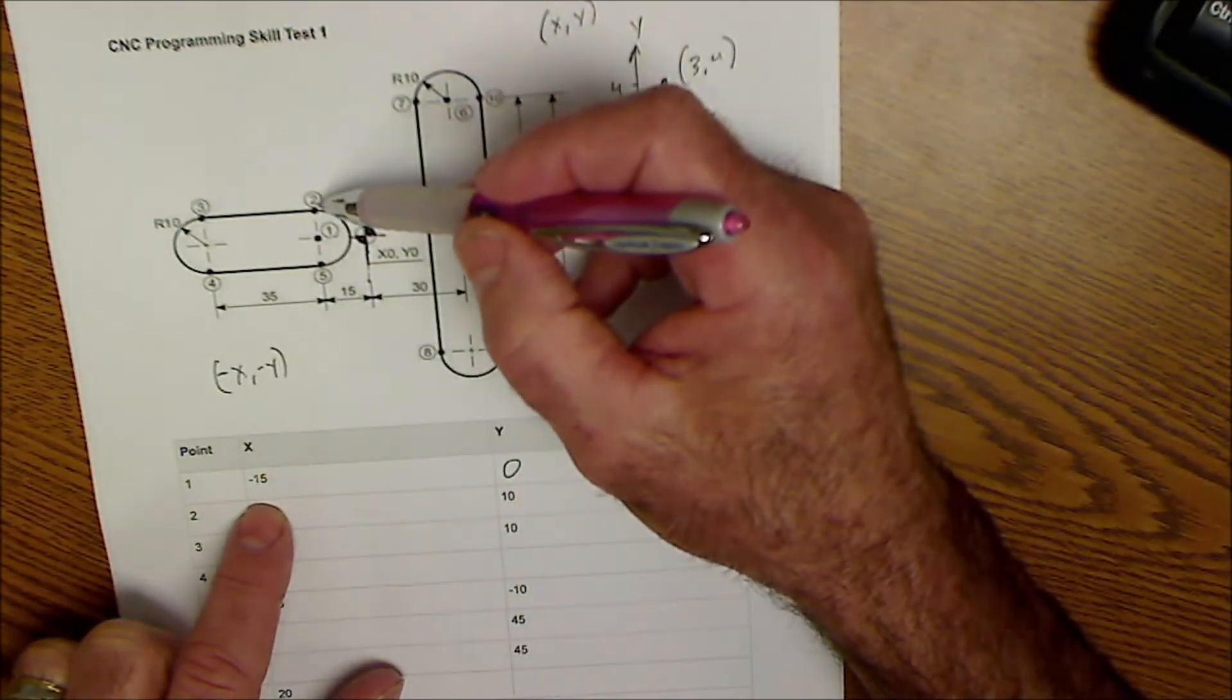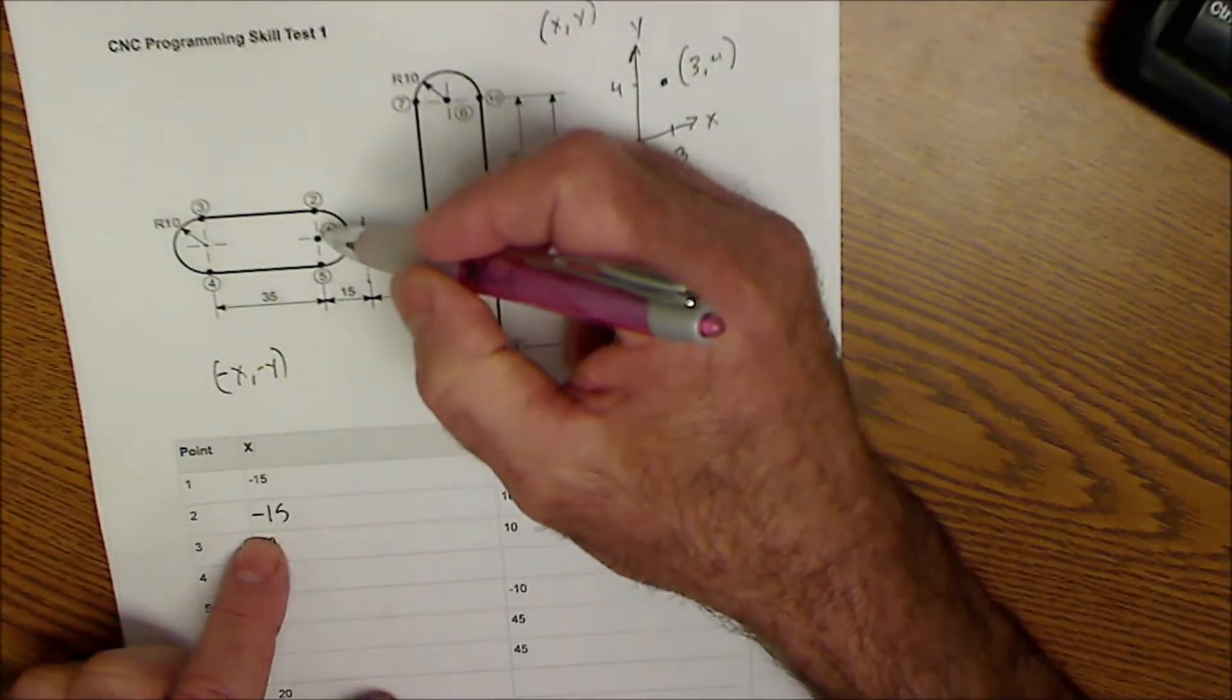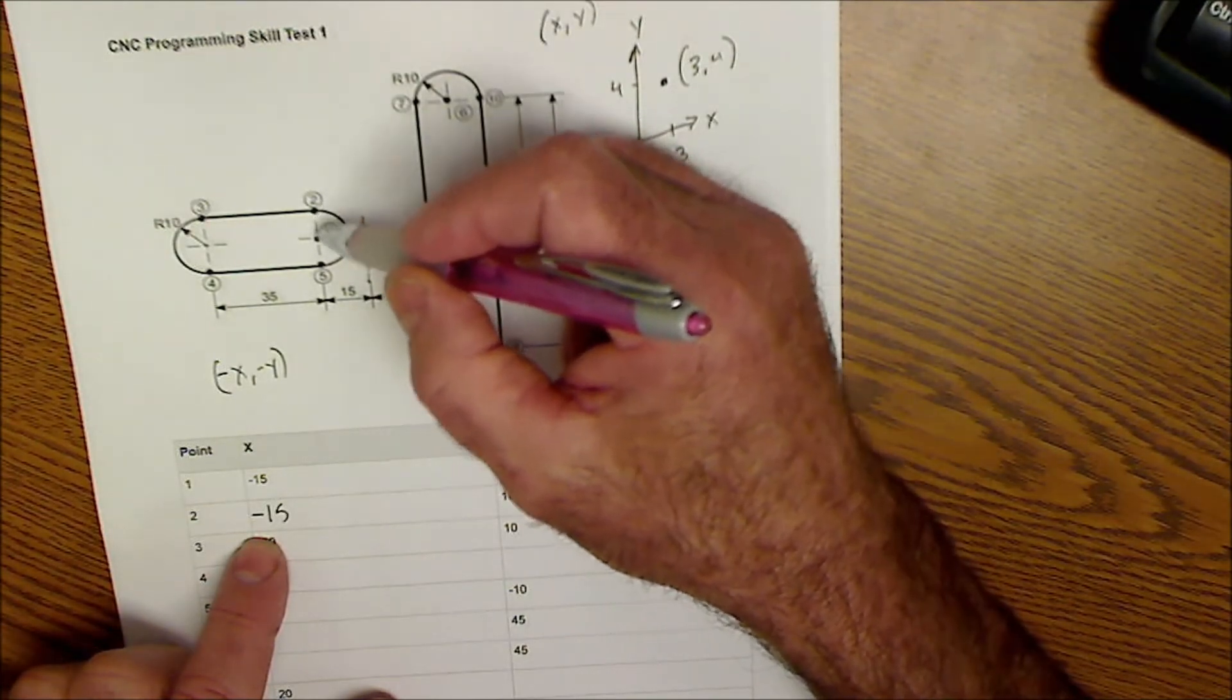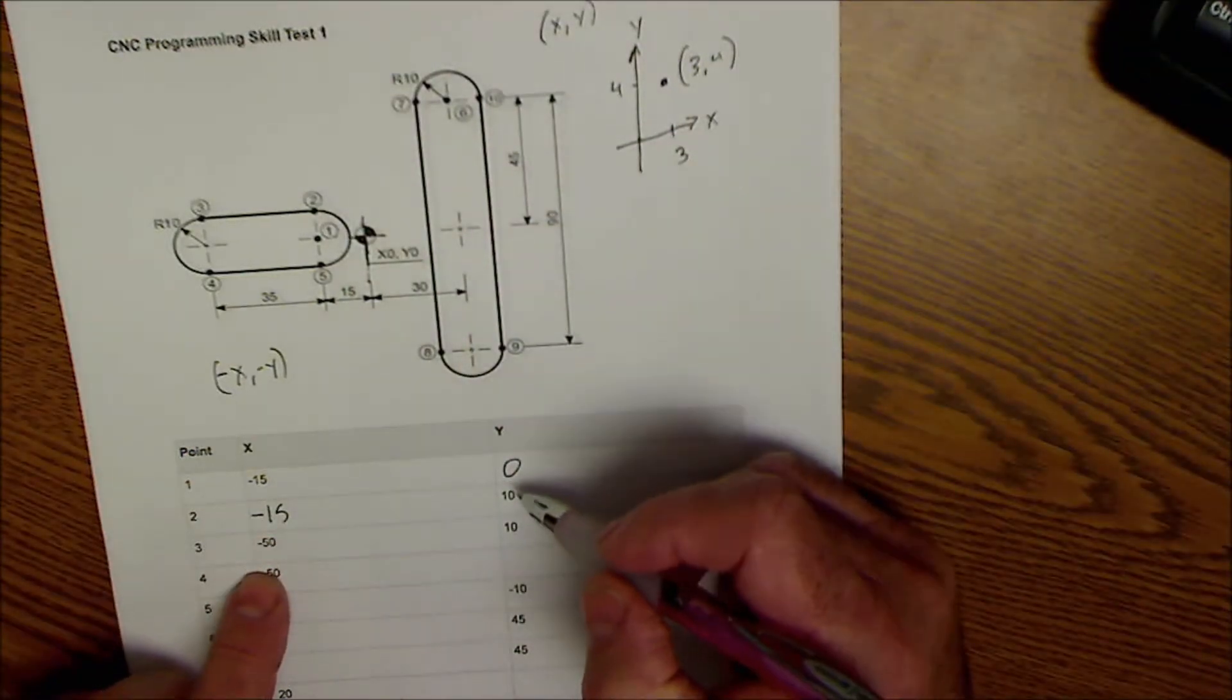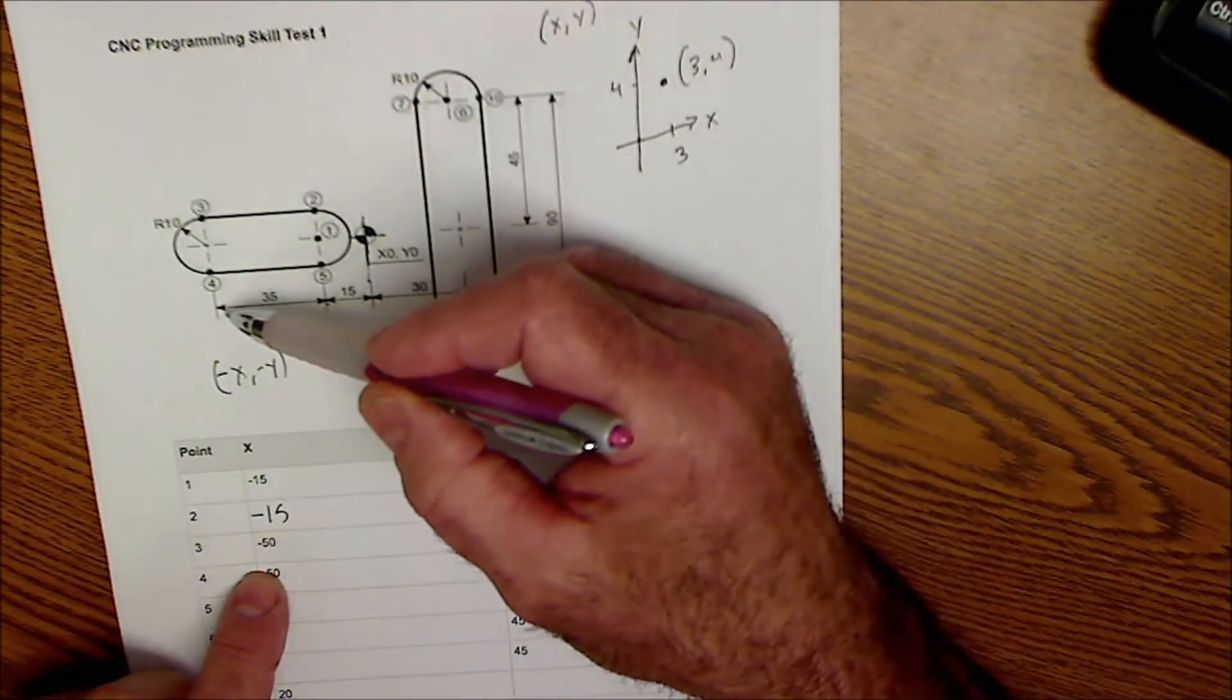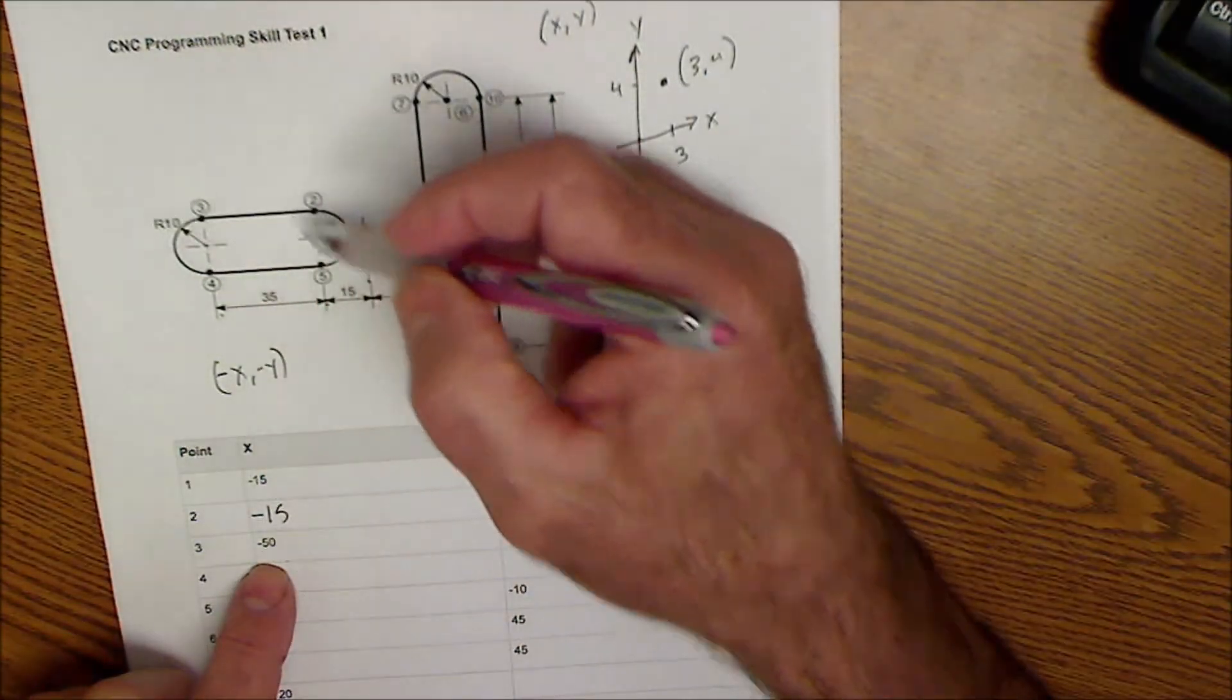Point number two is still at over negative 15, but it is now up the equivalent of a radius. So if this radius is 10, it would be 10 here and also 10 here. Point number three is right here. From the origin I go over 15 to the left, another 35 to the left, that gives me my negative 50, and then it's also up 10.